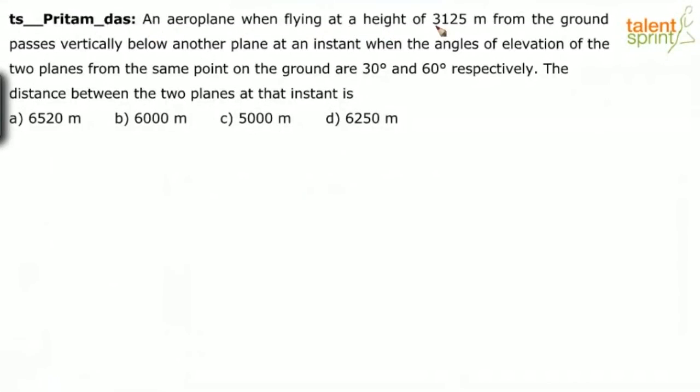An aeroplane when flying at a height of 3125 meters from the ground passes vertically below another plane at an instant when the angles of elevation of the two planes from the same point on the ground are 30 degrees and 60 degrees respectively. The distance between the two planes at that instant is. Options given: 6520, 6000, 5000, or 6250.